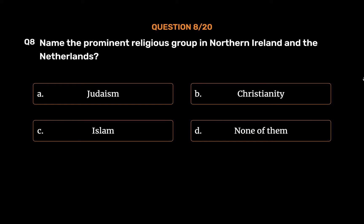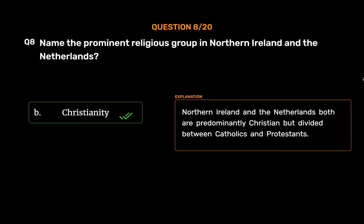The correct answer is Option B: Christianity. Northern Ireland and the Netherlands are both predominantly Christian but divided between Catholics and Protestants.